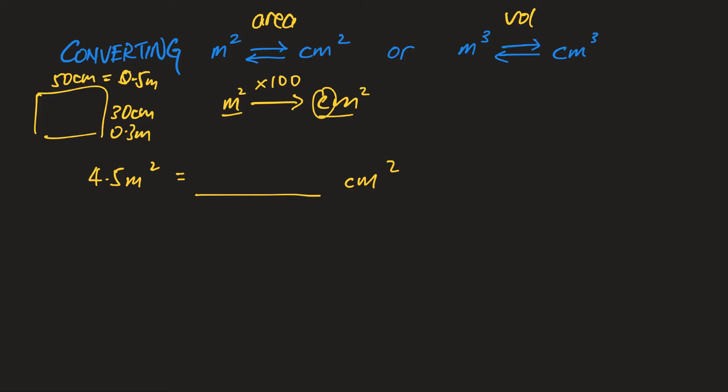So effectively this is similar to 100 times 100, which is 10,000. What I need to do is just bring the decimal place one, two, three, four, so it's 45000 cm squared. That's how you do the conversion.